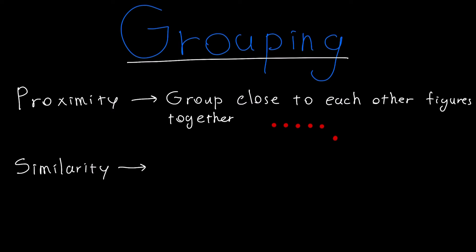Proximity means that we group close to each other figures together. So these ones are close to each other so we group them together, but this one's further away so we don't group that together in our perception.